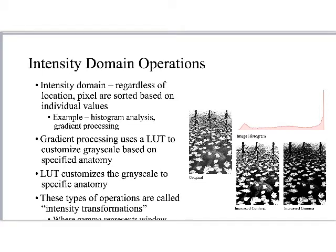These are shifts we can perceive with the eye, and it's helpful to have graphical representations. The computer frequently relies on the histogram and applies gradient curves to it. Intensity domain operations happen regardless of location — pixels are sorted based on individual values. Examples include histogram analysis and gradient processing. We defined a volume of interest last week; now within that volume of interest we're asking: is there a gradient, a shading we can apply to increase or decrease contrast as needed?